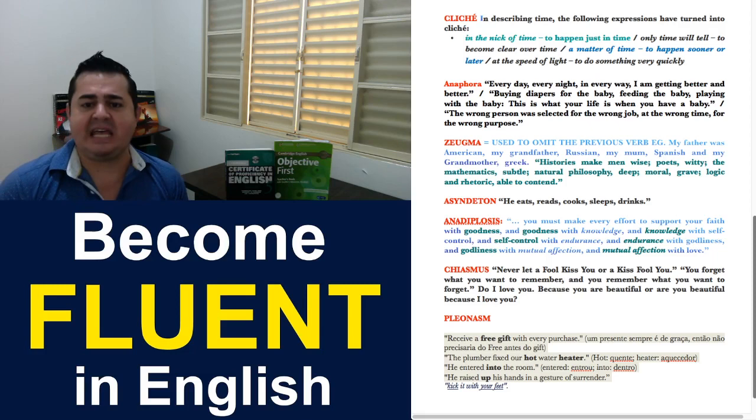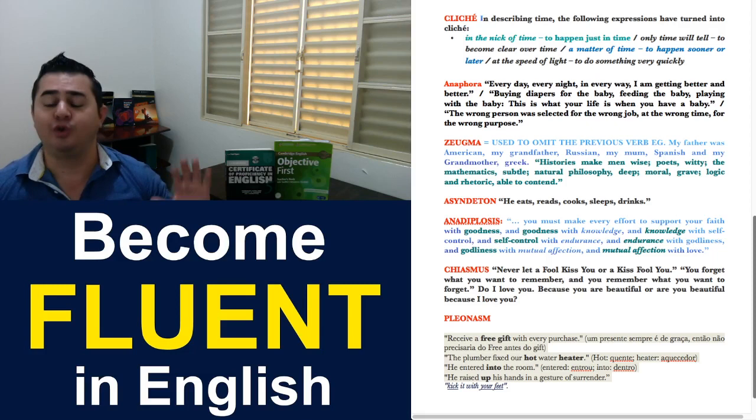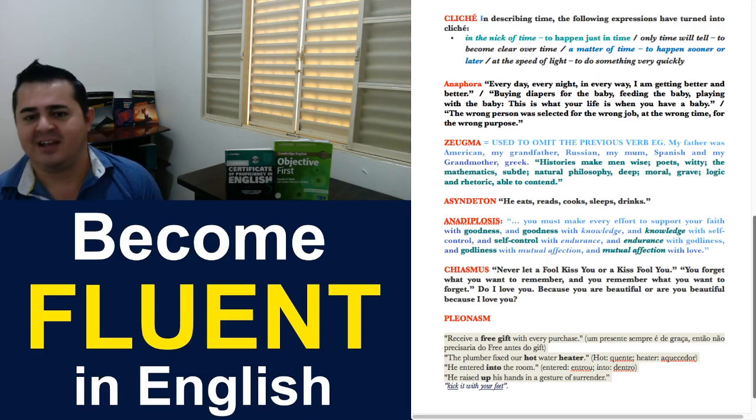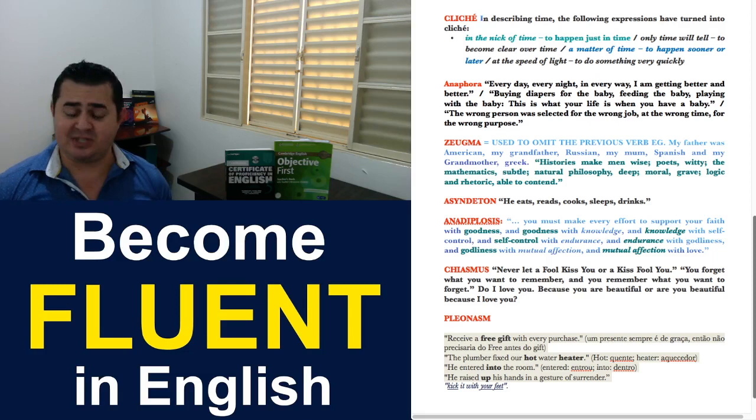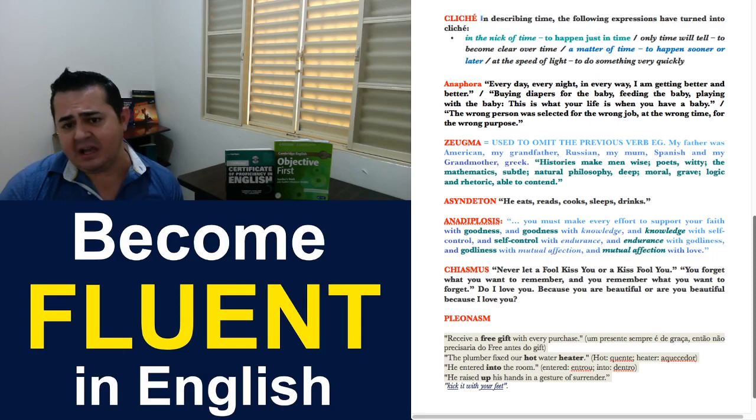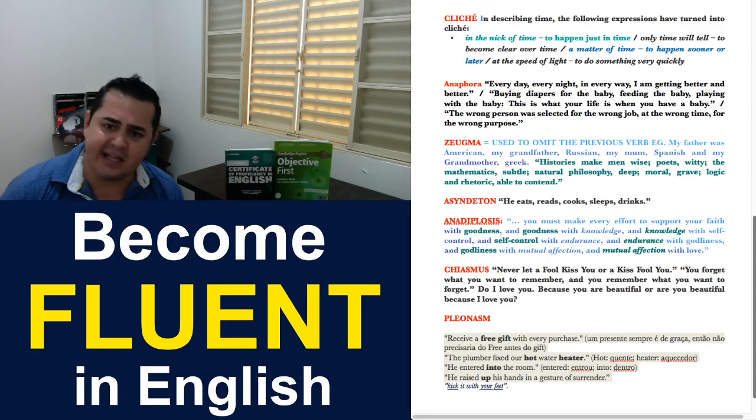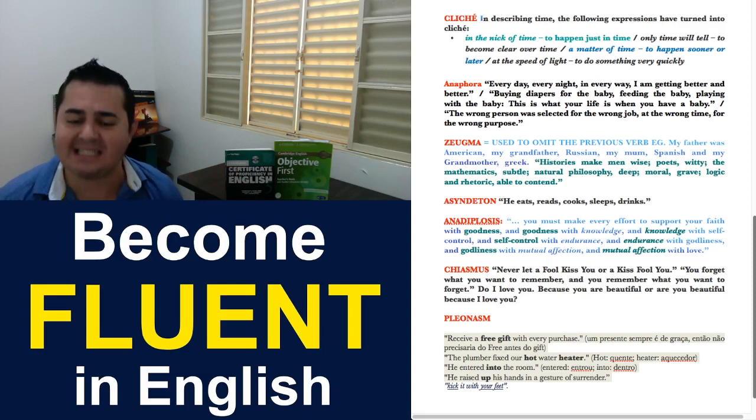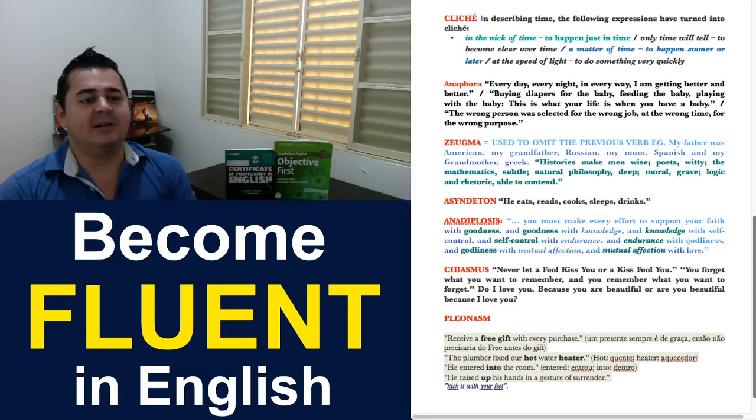Next figurative is the asyndeton. Which is used to eliminate and leave out conjunctions. In this case, we do not use conjunctions. So, we do not need to link our nouns. So, he eats, reads, cooks, sleeps, drinks. That's all he does. When you're complaining about something, it's very common to use asyndeton. Because you say everything that a person does. And they don't need to connect because there are many things to be said in a row. So, all she does is studying, reading, eating, waking up, having a shower, feeding the cat. You're giving a sequence of events. Because you're not using conjunctions. You're not linking your words. It's called asyndeton. That's the formal name to that.